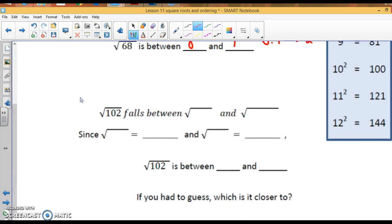Alright. Last one. The square root of 102 falls between 100 and 121. Since the square root of 100 is 10 and the square root of 121 is 11. 102 is between 10 and 11. But, it's just a little bit more than 100. So, I would say a good estimate would be 10.1.